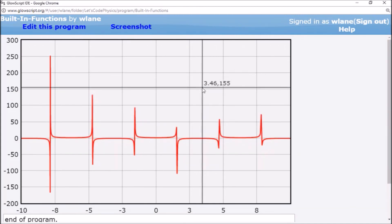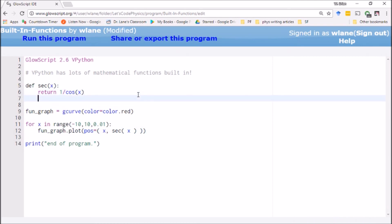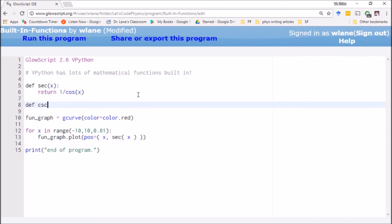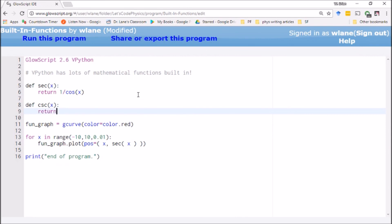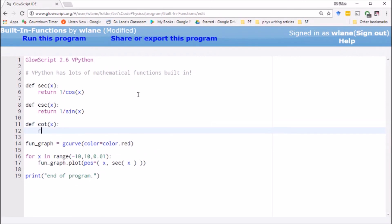And then if you wanted the cosecant, you could define another function. Because you can define as many functions on your own as you want. Cosecant of x, return 1 over sine of x. And then if you wanted the cotangent, you could return 1 over tangent of x. And it's just referencing those functions it already knows to give you the functions that you want.